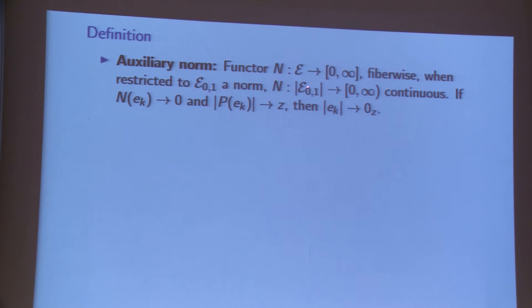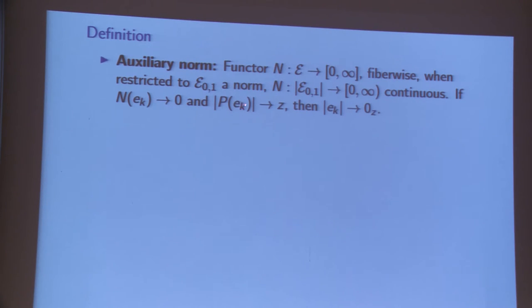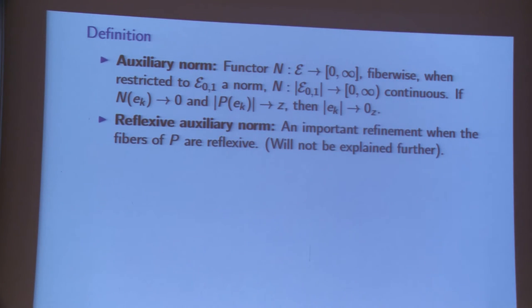If you go to the orbit space, it should be continuous and have the following property: if you take a sequence of objects so that N goes to zero, and if the isomorphism class of the base point below converges, then the isomorphism class of this vector converges to the isomorphism class of zero over that point. That's the requirement — some kind of local uniformity. There's also something called a reflexive auxiliary norm, which is an important refinement to utilize more general compactness.